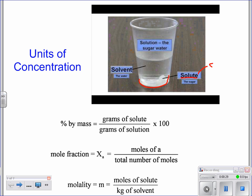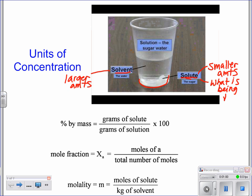The solute is always going to be in smaller amounts, whereas the solvent is always going to be in larger amounts. Just like the words themselves, solvent is larger than solute. The solute is what's being dissolved, whereas the solvent does the dissolving.